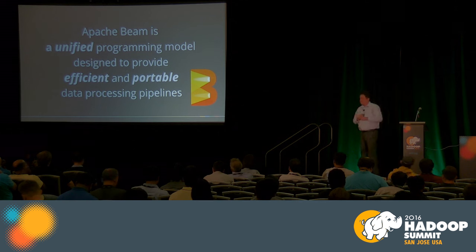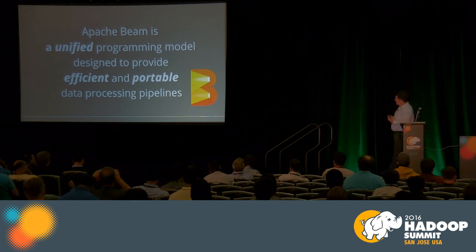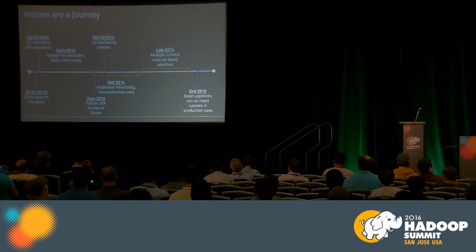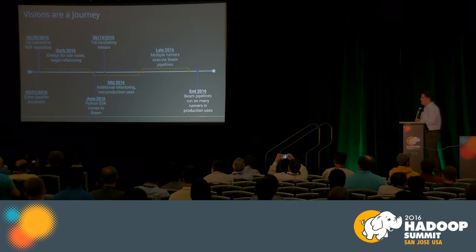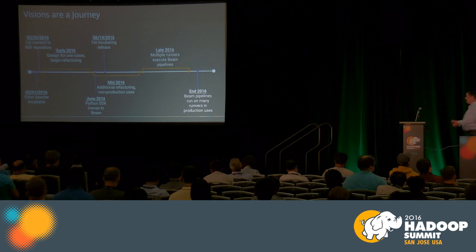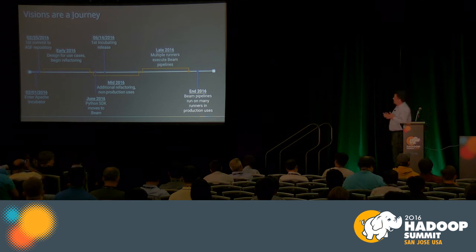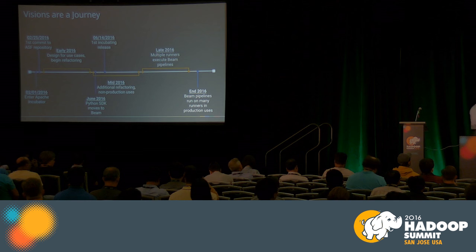Apache Beam is a unified programming model designed to provide efficient and portable data processing pipelines — unified, efficient, and portable. Visions are a journey. We are a mature technology but still early in the project. We are not ready for production use today, but ready for developers, ready to grow the community, ready to connect with more SDKs and runners, and ready for early proof-of-concept user pipelines. In a few short months, we will be ready for production use.